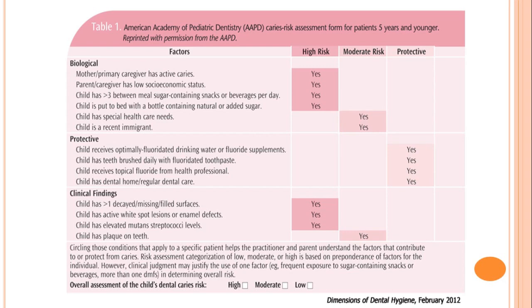Here we have a table from McDonald and Avery and the American Academy of Pediatric Dentistry caries risk assessment form for patients five years and younger. From this form we can determine how much risk the child has for early childhood caries. High risks include: if the mother or primary caregiver has active caries, low socioeconomic status, greater than three between-meal sugar-containing snacks, or the child is put to bed with a bottle containing natural or added sugar.